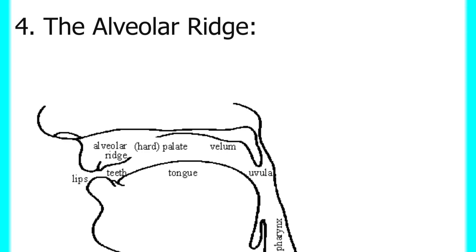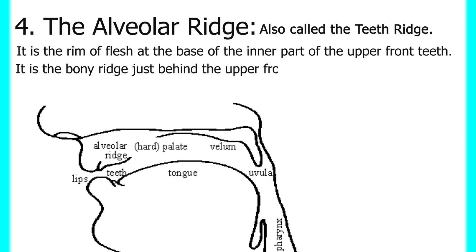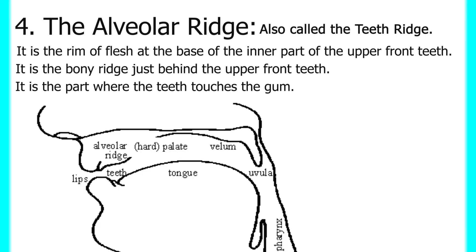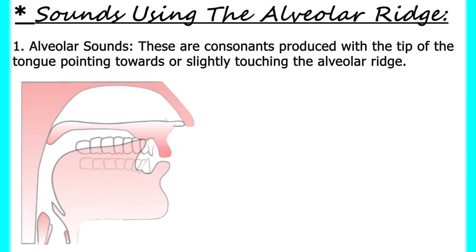Next we have the alveolar ridge, also called the teeth ridge. It is the rim of flesh at the base of the inner part of the upper front teeth — the bony ridge just behind the upper front teeth. It is the part where the teeth touch the gum. Sounds produced with the tip of the tongue pointing towards or slightly touching the alveolar ridge are called alveolar sounds.